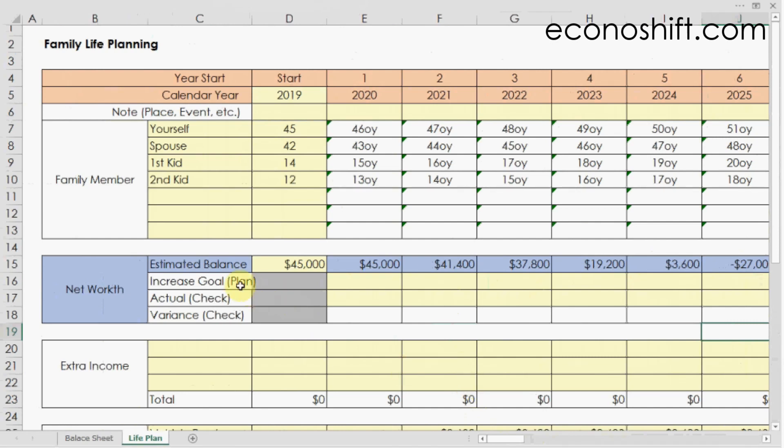So, enter each year's savings goal amount in the yearly increase goal row. In this example, I found that I have to save at least $10,000 each year.